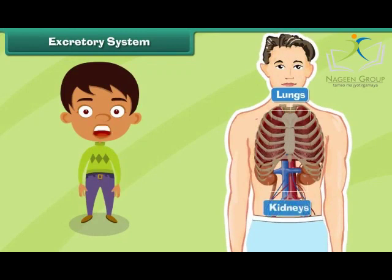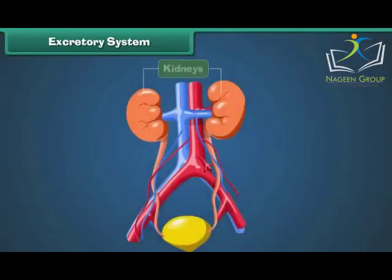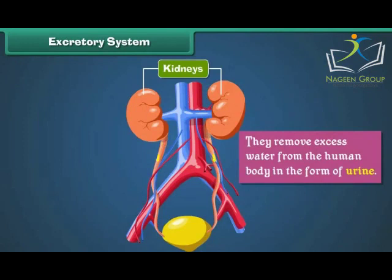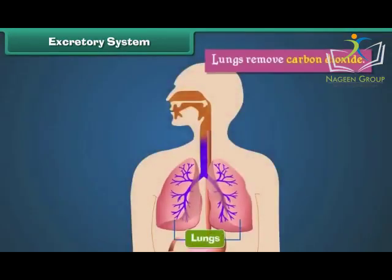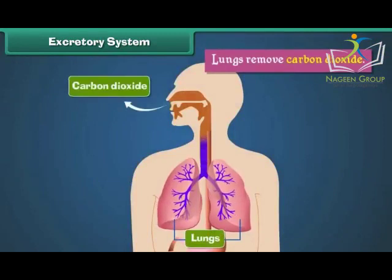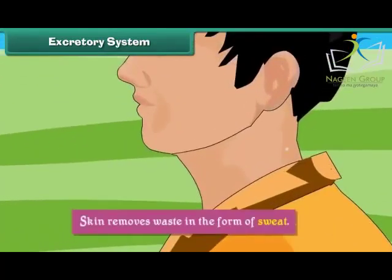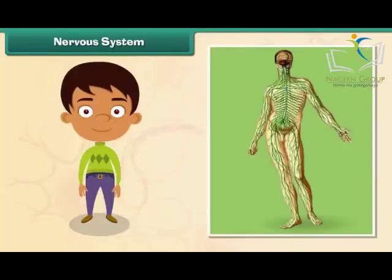The human excretory system is made up of lungs, kidneys, and skin. It removes wastes from the human body. Kidneys purify blood and remove excess water from the human body in the form of urine. Lungs remove carbon dioxide, and skin removes waste in the form of sweat.